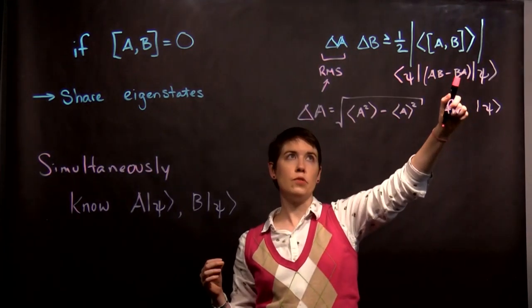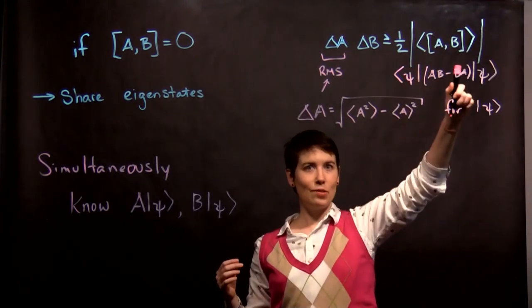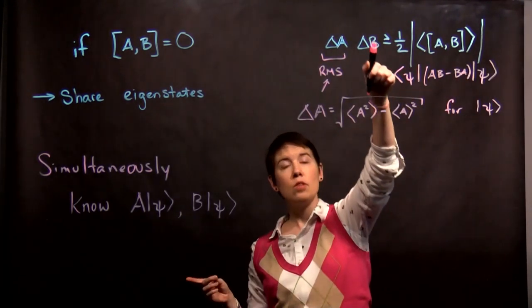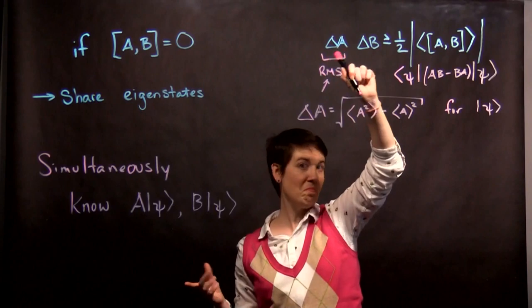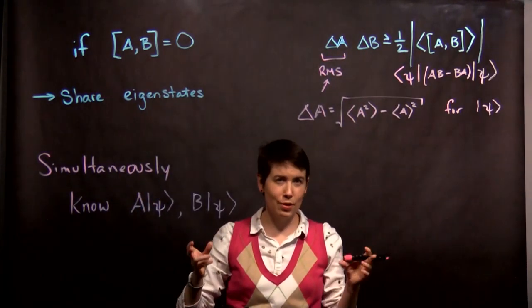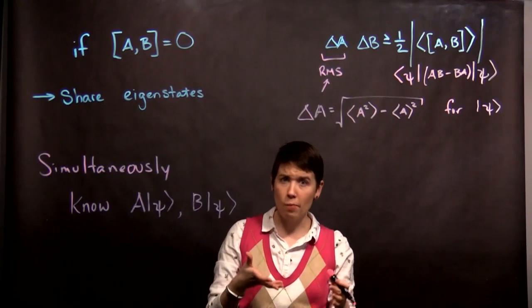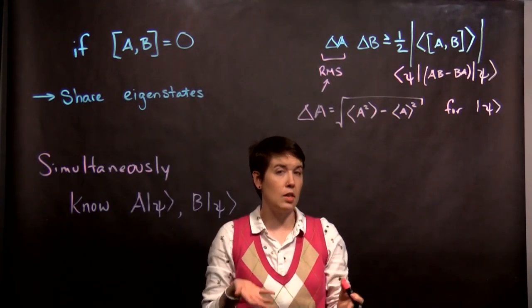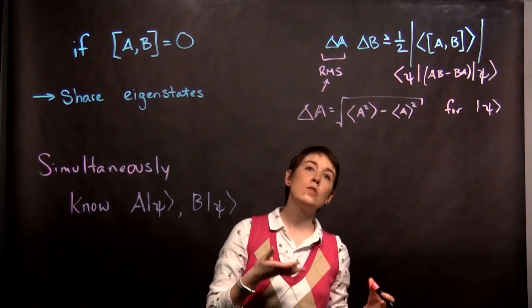So notice that if this is zero, our expectation value will be zero. This whole right side is zero, which means that this can be zero. So if you can measure these at the same time, that Heisenberg uncertainty principle doesn't apply. There are some quantum things we can know exactly at the same time. But for many others, we can't.